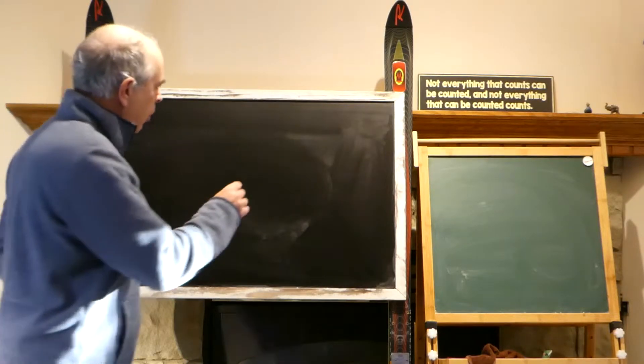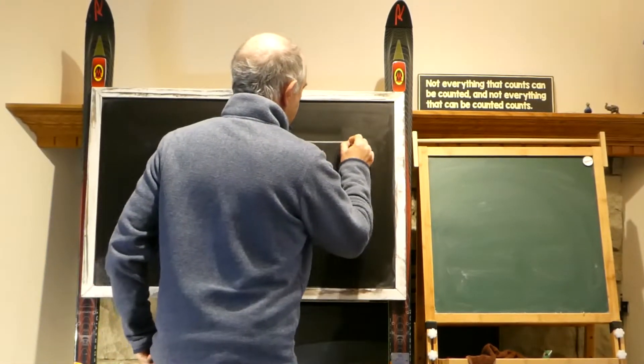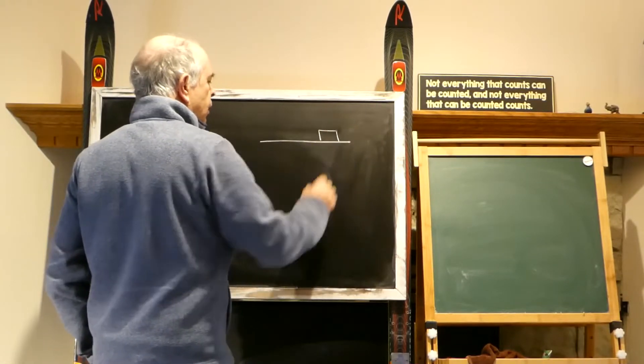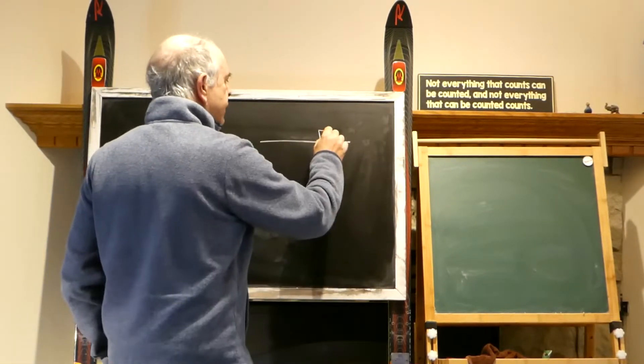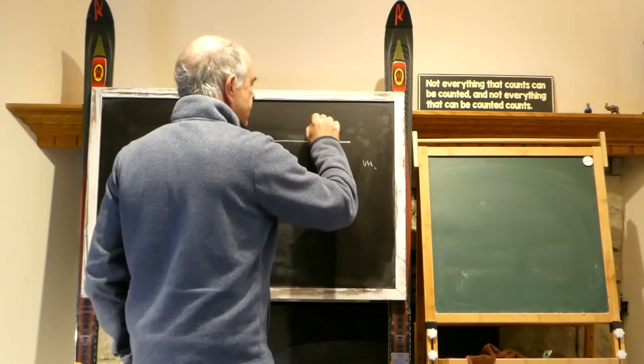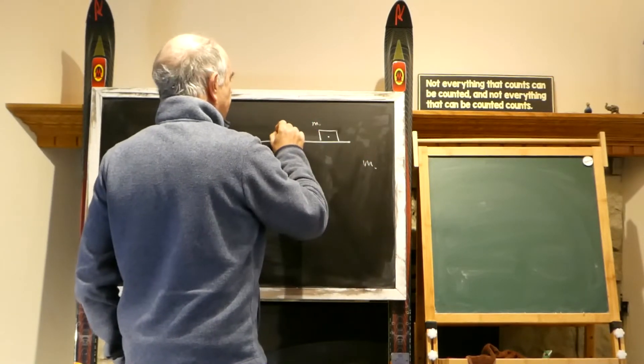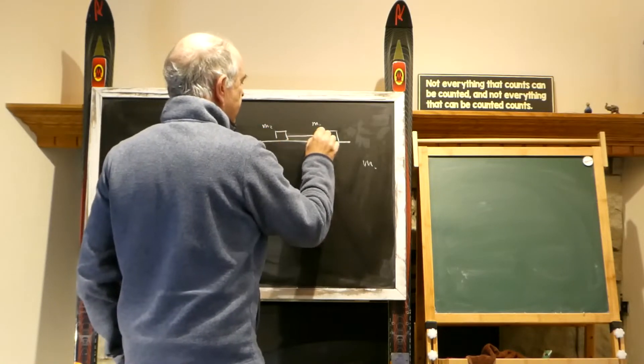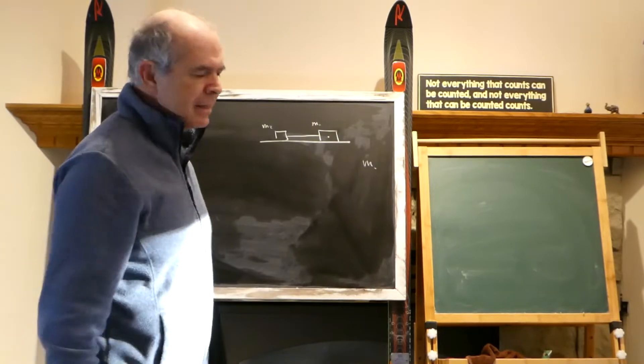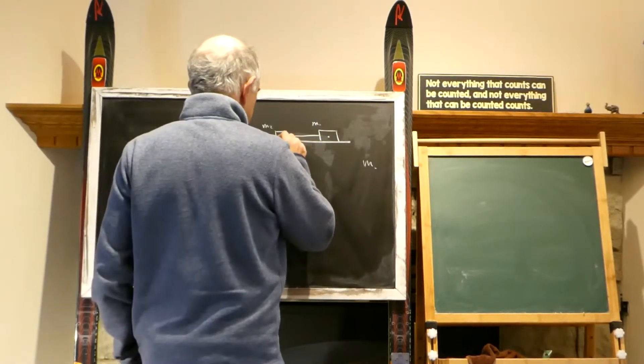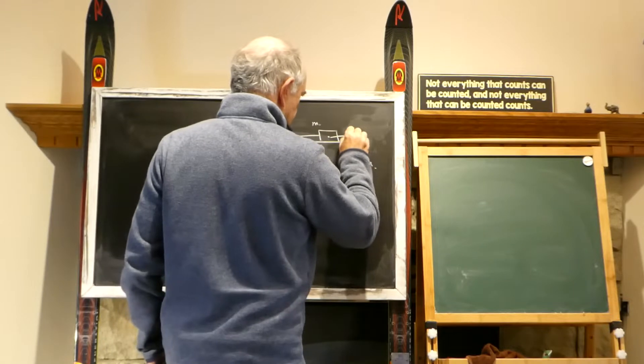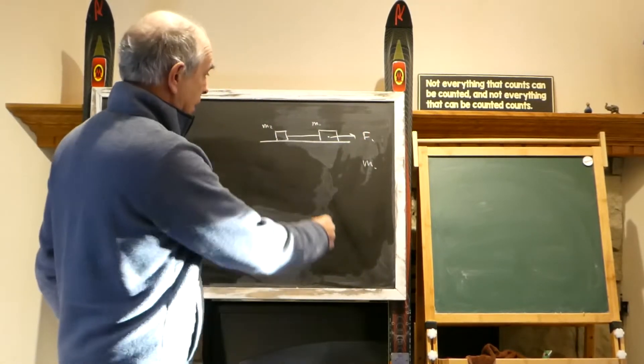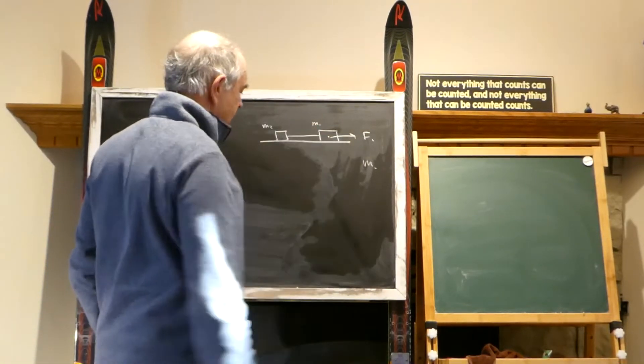This problem is about tension. We have a flat surface and on this flat surface we have two bodies. One body is M1, and another body is M2, and they are connected with a rope. We apply F1 here and nothing here, so it's like a train or a car with a trailer.